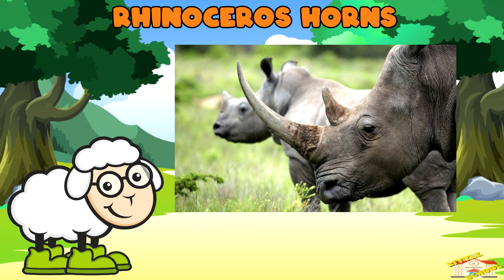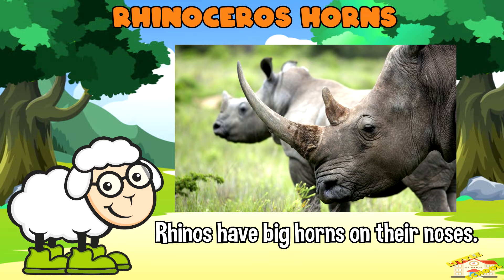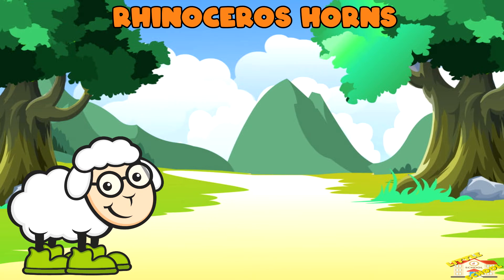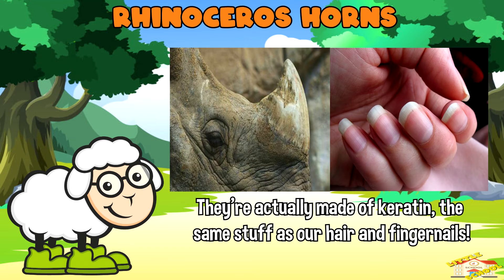Rhinoceros horns: rhinos, another kind of ungulate, have big horns on their noses. But did you know these horns are not made of bone? They're actually made of keratin — the same stuff as our hair and fingernails.